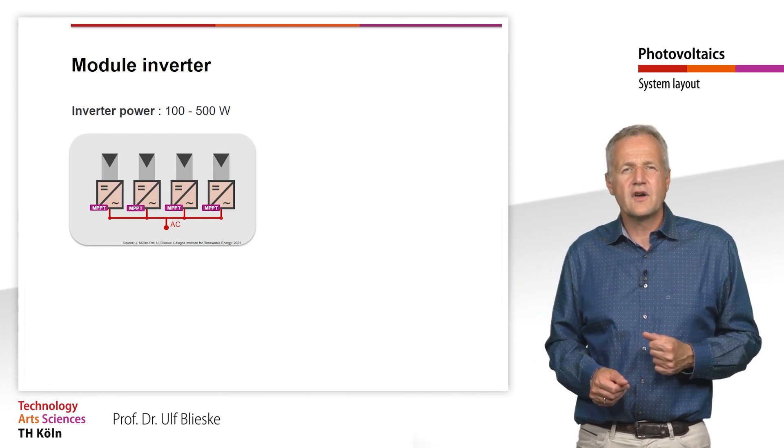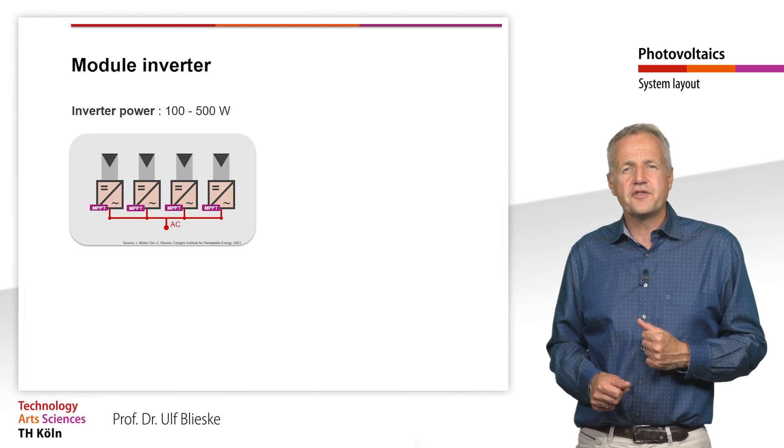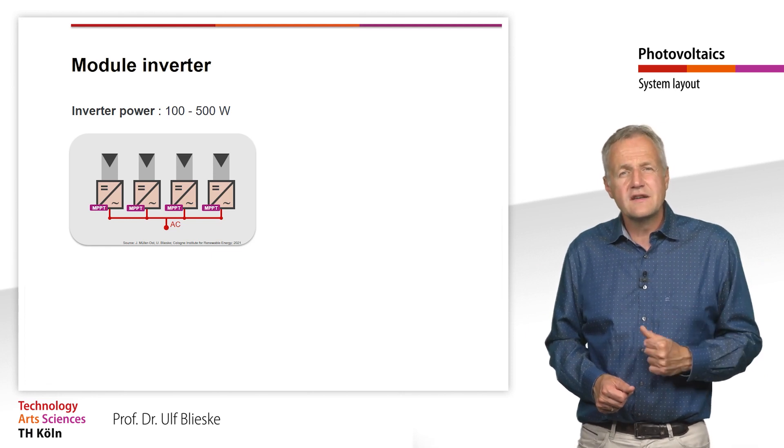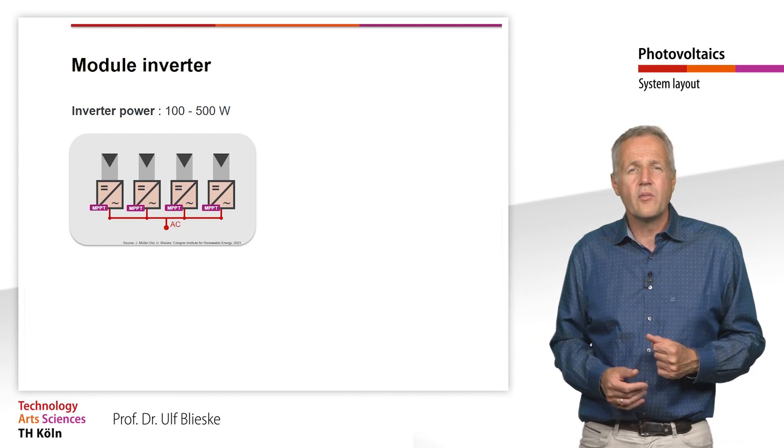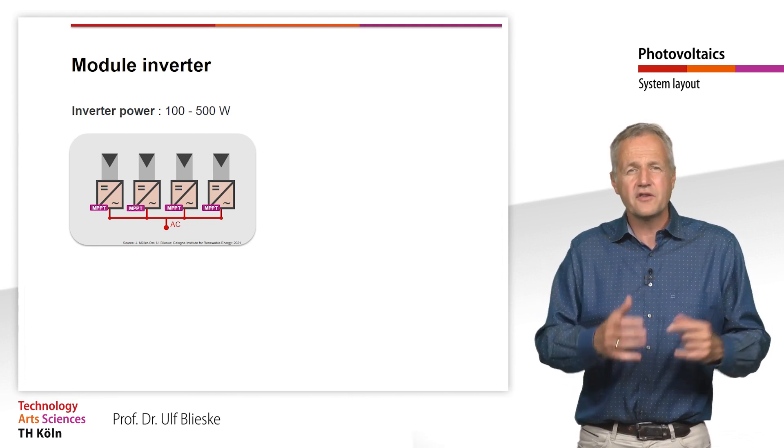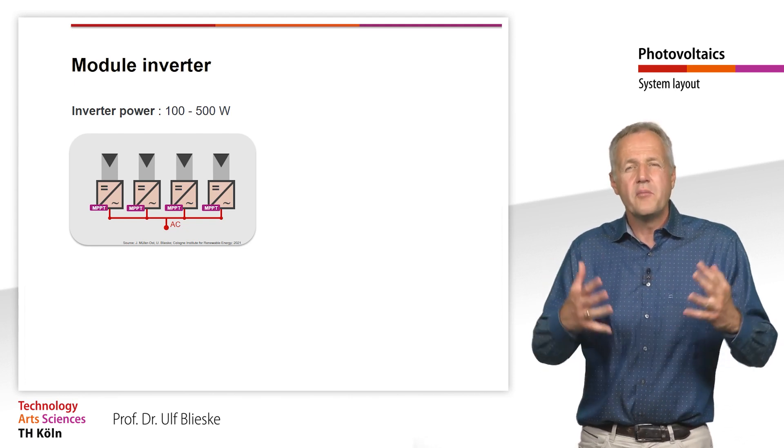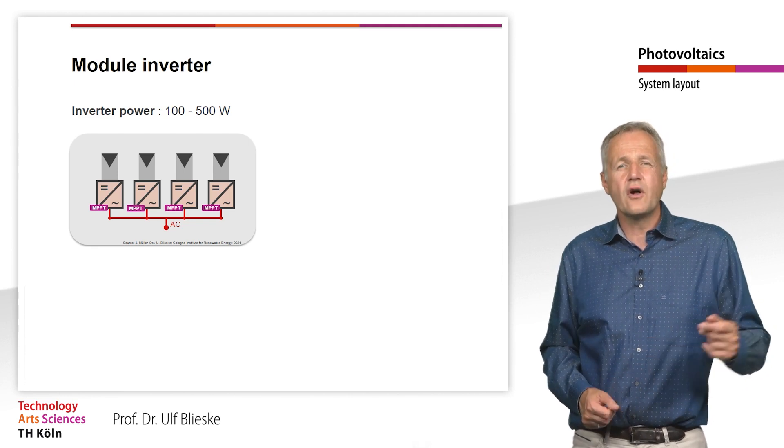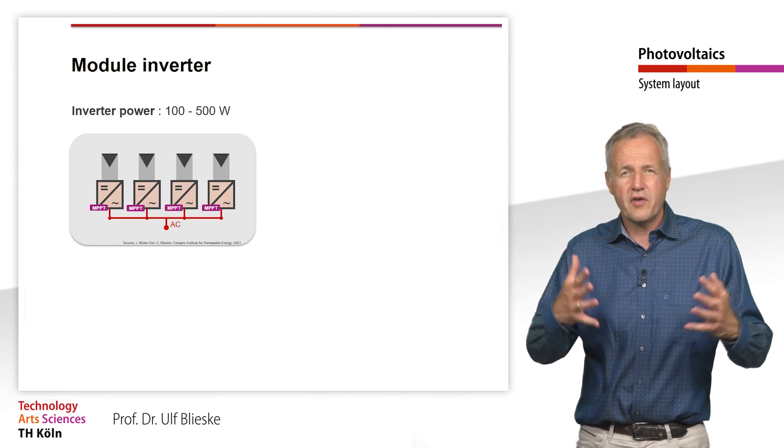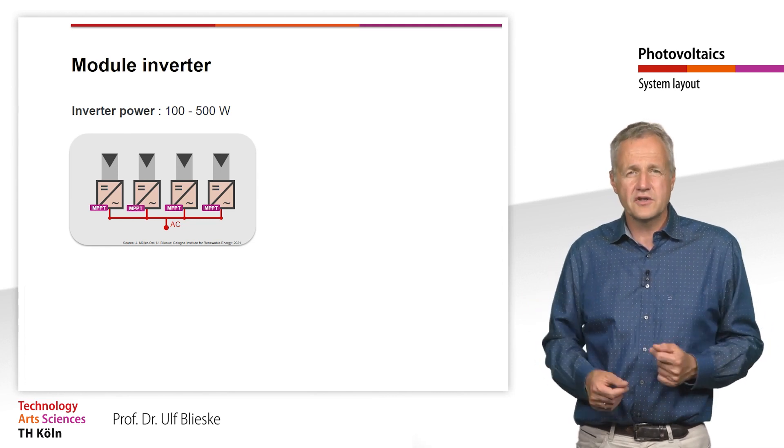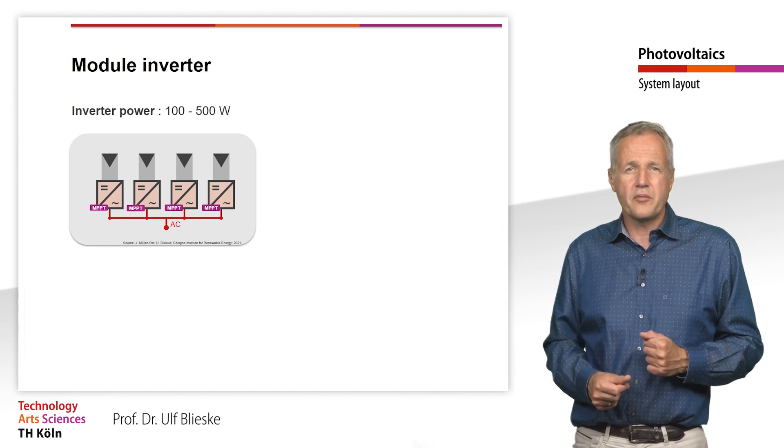However, module inverters also have some disadvantages, which are responsible for the fact that this technology is a niche market so far, at least in Europe. In the US, module inverters representing a plug-and-play concept are more popular. But, also in Europe, the so-called guerilla or plug-in photovoltaics of modules on the balcony of private homes is often based on module inverters, and it is becoming more and more popular.